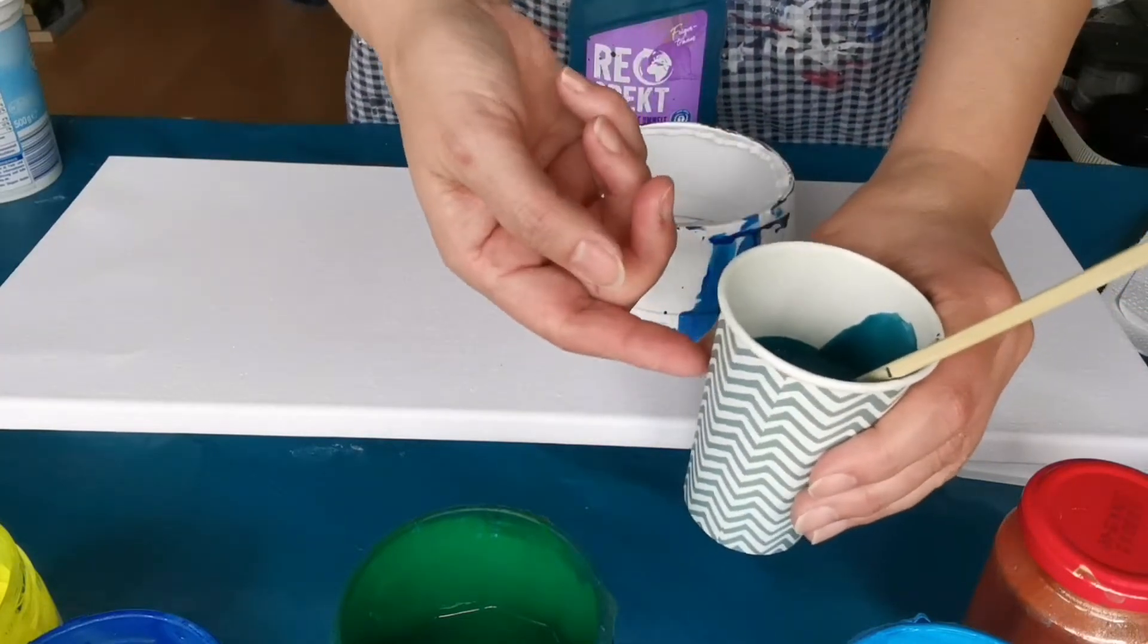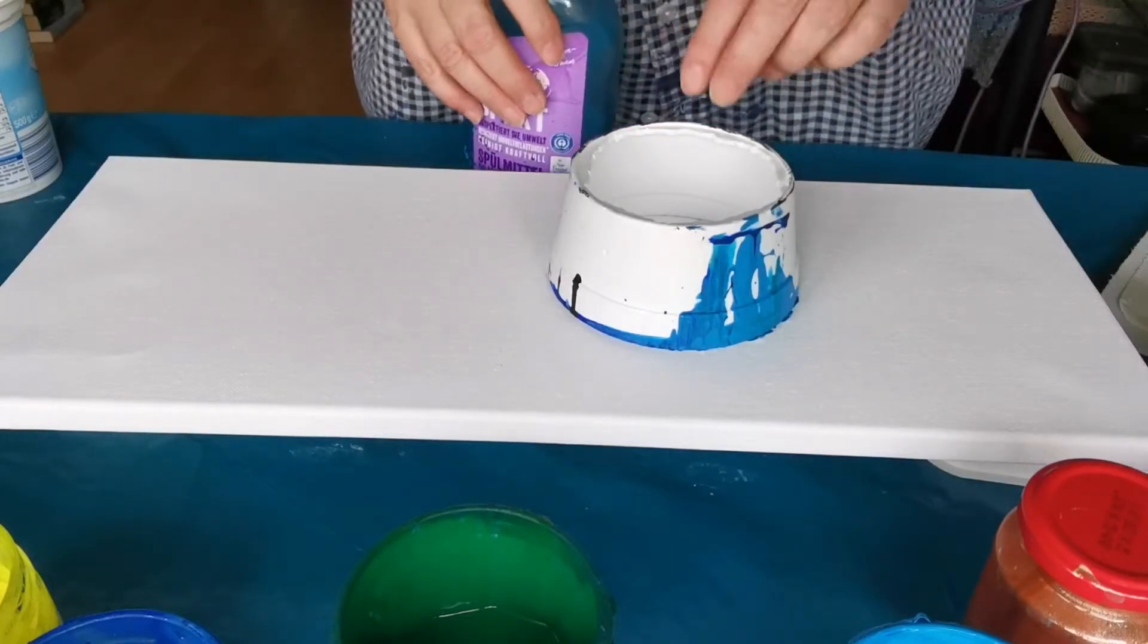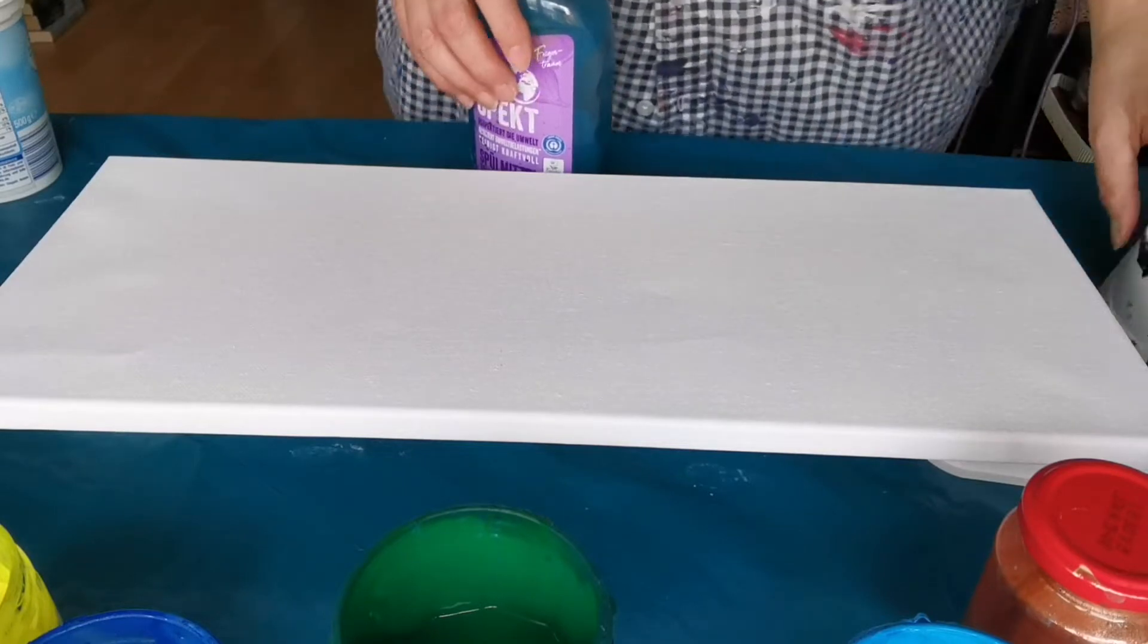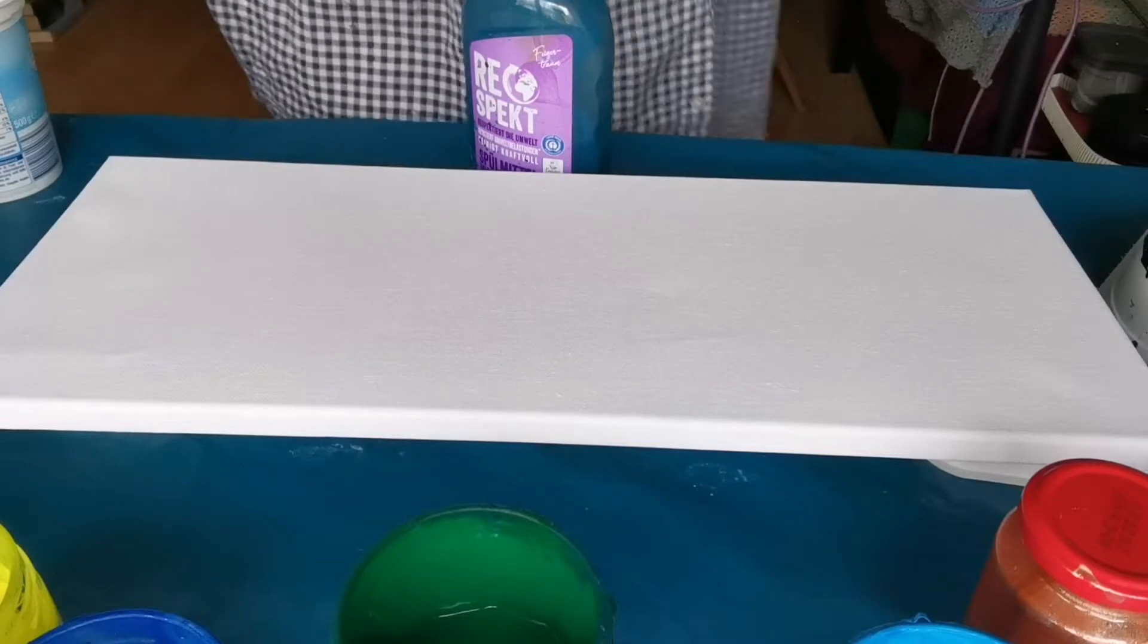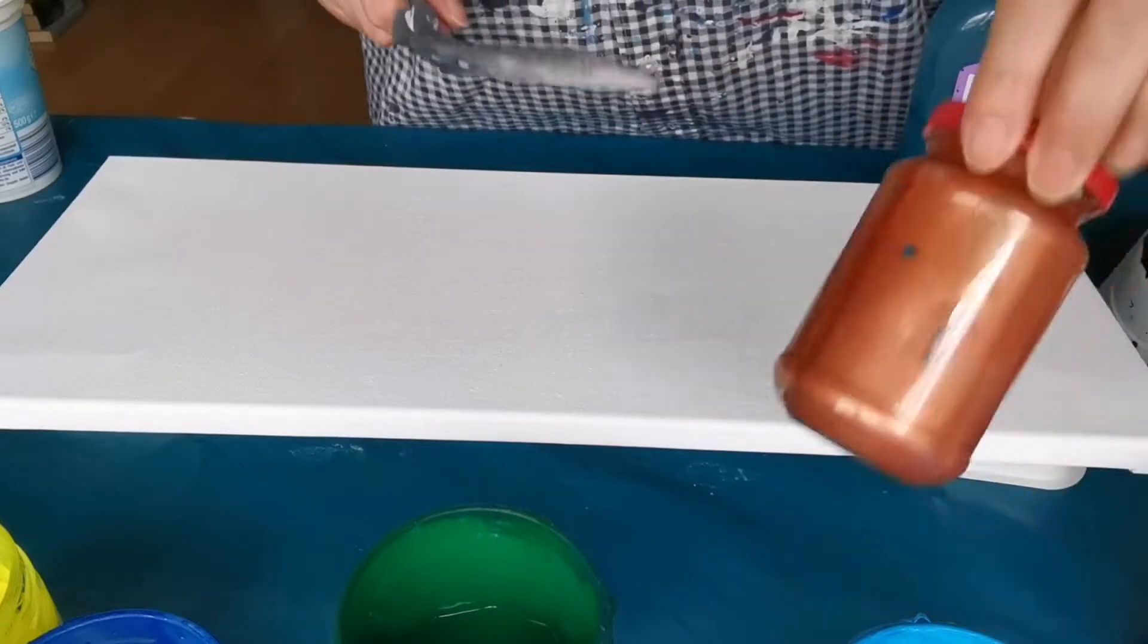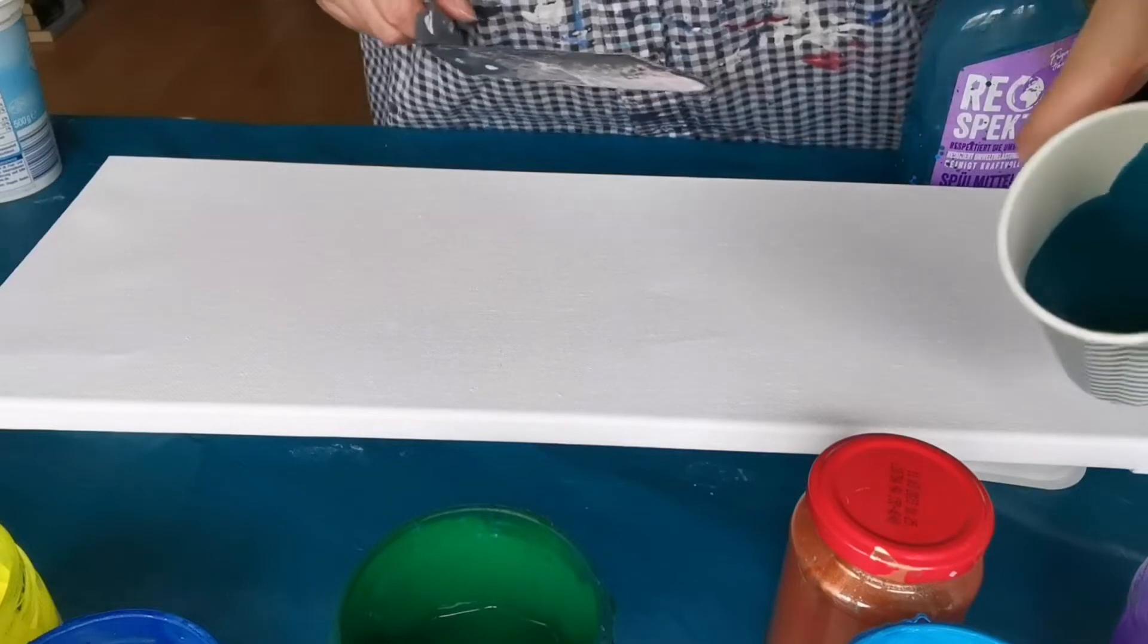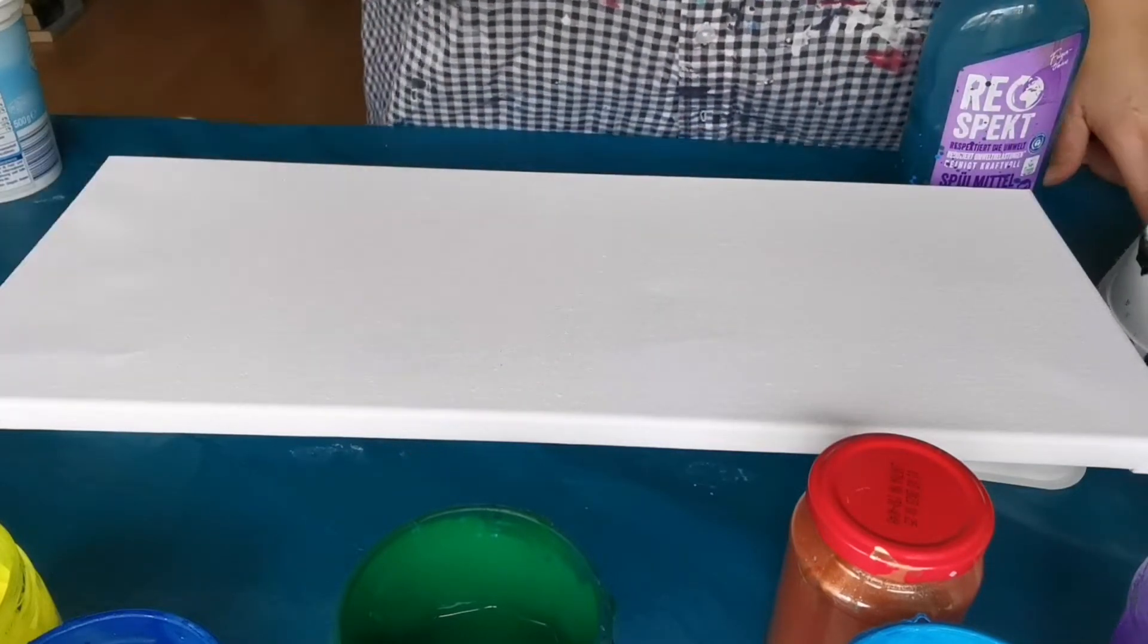You could also use something smaller, like you could cut a ring of a cup and use it. I want to do a kind of autumn-like painting, so I will use a pretty dark teal as a foundation. Then I have copper, purple, another version of teal, dark blue, lighter blue, and yellow.